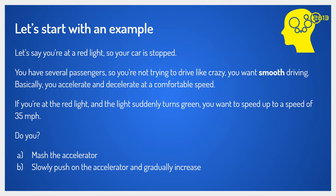It's easier to explain PID with an example rather than going directly into what PID does, so let's talk about a real world example. Let's say you're at a red light — your car is stopped — and you're carrying a few passengers, so you don't want to drive like crazy. You want to drive smoothly, because if you brake super hard or accelerate super hard your body is going to experience a lot of g-forces and jerk everybody around. So if the light turns green and you want to speed up to 35 miles an hour, do you mash the accelerator to the bottom, or do you slowly push on the accelerator and gradually increase?